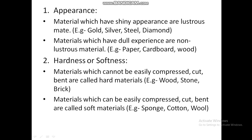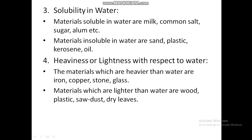Hardness or softness: materials which cannot be easily compressed, cut, or bent are called hard materials. Examples: wood, stone, brick. Materials which can be easily compressed, cut, or bent are called soft materials. Examples: sponge, cotton, wool, etc.